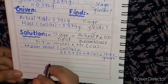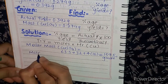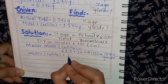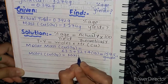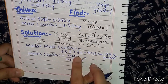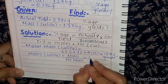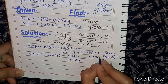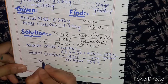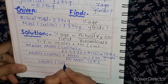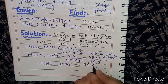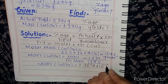Now we will find the moles of CuSO₄ using the formula: moles = mass divided by molar mass. Our mass is 1.274 grams divided by 159.5 grams per mole, so the moles of CuSO₄ equal 7.98 × 10⁻³ moles.